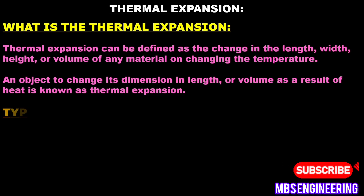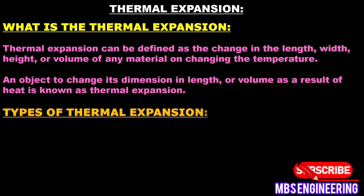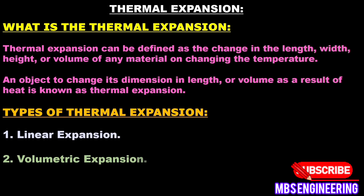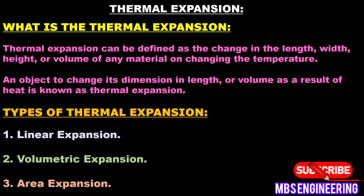The first type is linear expansion, defined as the increase in the length of a solid as a result of the heating process. The second type is volumetric expansion, defined as the increase in the volume of a solid due to heating. The third type is area expansion, defined as the increase in surface area of a solid as a result of the heating process.